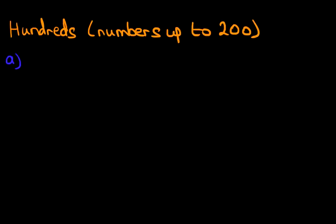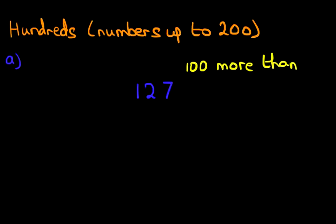Suppose we have this number 127. And we have to find out 100 more than 127. Now this is relatively easy. We can label the columns of the number. We've got the seven which is the units, the two is the tens, and the one is a hundred.